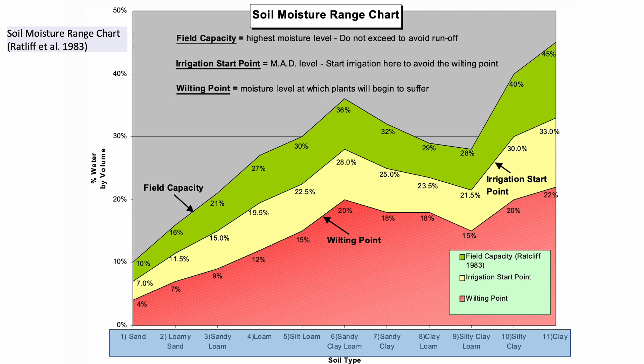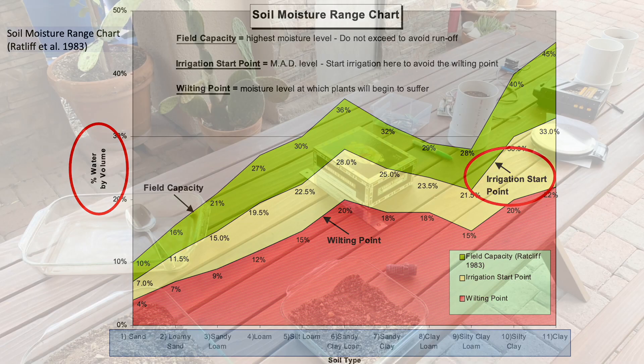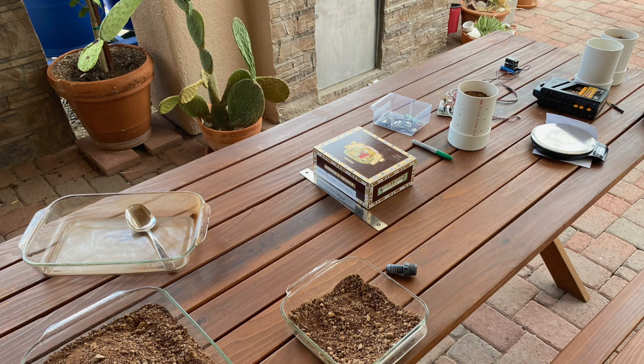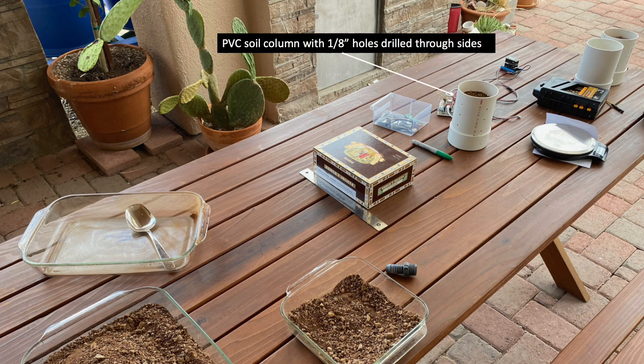I wondered if I might improve previously determined wet-to-dry ranges with a discrete flag that tells me when I've hit the recommended irrigation start point for my local soil. This chart has recommended irrigation start points as a function of soil texture and volumetric water content, so I wanted to see if I might calibrate these sensors to the minimum volumetric water content thresholds that should trigger irrigation. I set up a simple experiment to measure volumetric water content of a local soil sample using a PVC column of wetted soil and a digital scale to measure how much water is evaporated over time.